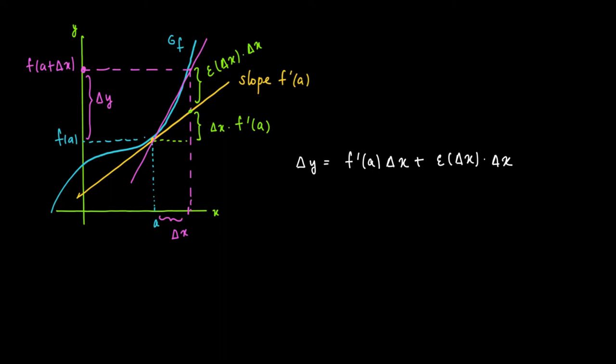So we get the change along the tangent line, which is a change in function value estimated along the tangent line. So we take a step delta x and we go up, well at least in this picture, we go up with delta x times f'(a).